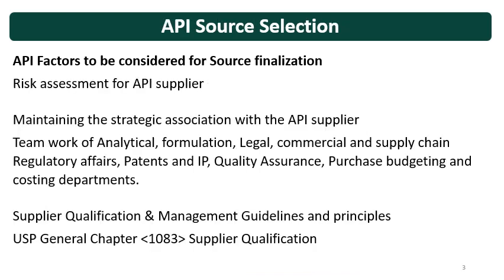API factors to be considered for source finalization include risk assessment of the API supplier, and maintaining a strategic relationship with the API supplier, because both parties are doing business and have their own requirements and timelines. So the supplier and the purchaser should have a good association. API source selection and API selection is a team effort — it is not the work of a single person.